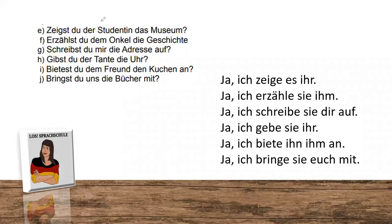Let's compare the exercise: 'Zeigst du der Studentin das Museum?' — 'Ja, ich zeige es ihr.' 'Erzählst du dem Onkel die Geschichte?' — 'Ja, ich erzähle sie ihm.' 'Schreibst du mir die Adresse auf?' — 'Ja, ich schreibe sie dir auf.' 'Gibst du der Tante die Uhr?' — 'Ja, ich gebe sie ihr.' 'Bietest du dem Freund den Kuchen an?' — 'Ja, ich biete ihn ihm an.' 'Bringst du uns die Bücher mit?' — 'Ja, ich bringe sie euch mit.'